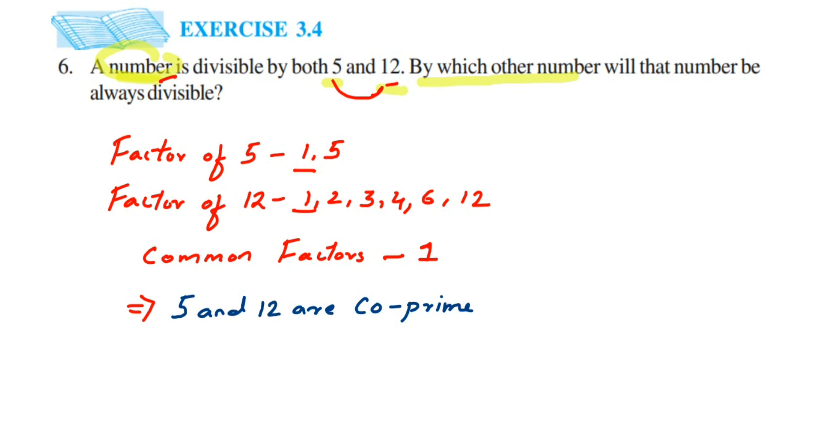then the number is always divisible by the product, that is 5 into 12, which is 60—that is the other number by which the number will be divisible.